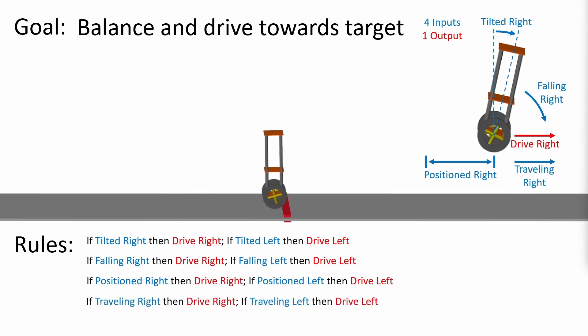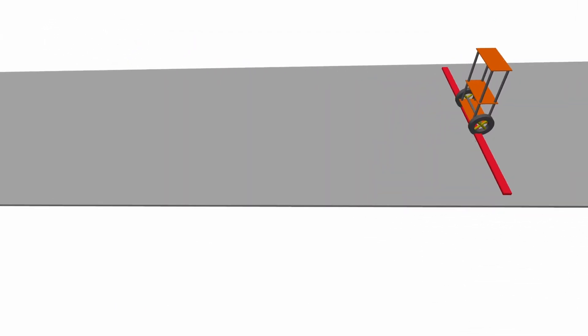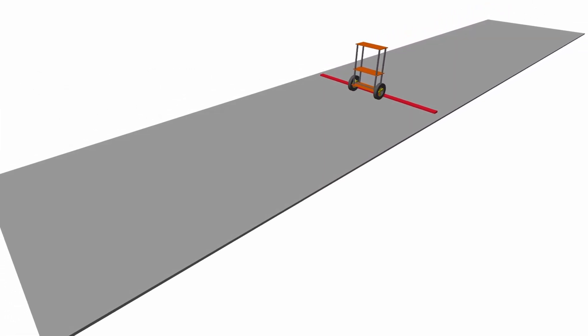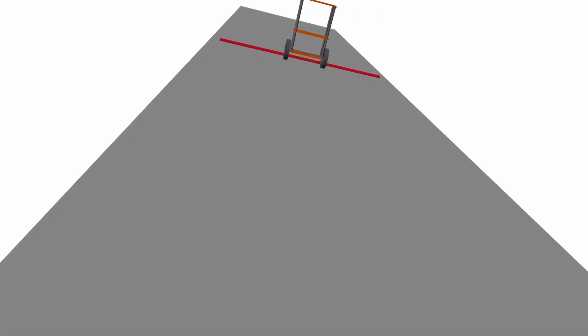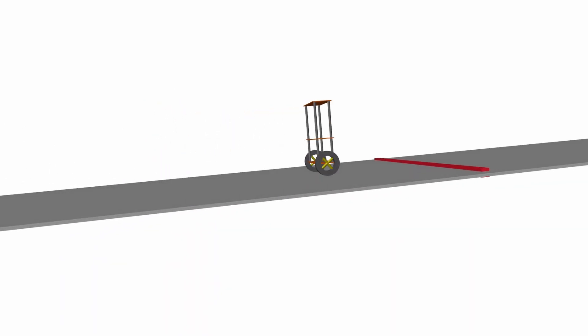And success! The robot balances on the target position. Notice throughout this process that no mathematical calculations were required and we only needed minimal understanding of the Segway. How tall was it? We don't care. How much friction was there between the tires and the ground? Don't care. Using intuition alone, we designed a fuzzy logic control scheme to achieve our goal.